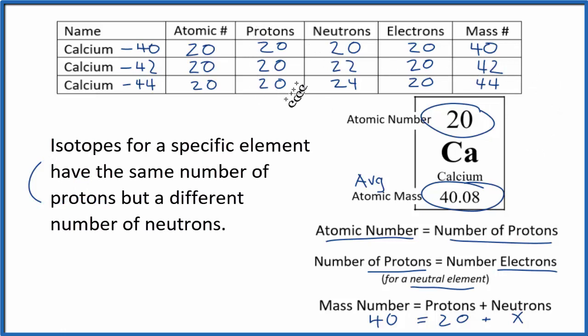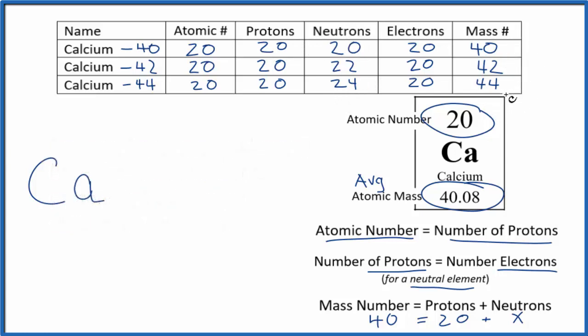So these are isotopes of calcium. They have the same number of protons but a different number of neutrons. Protons plus neutrons gives us mass numbers, so this is going to be different as well.